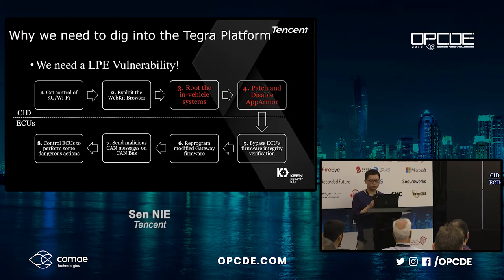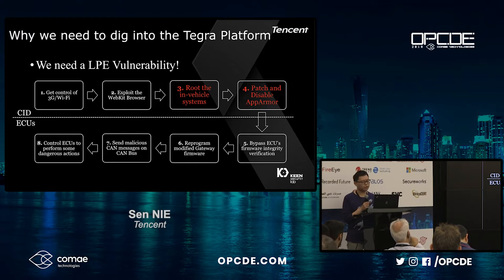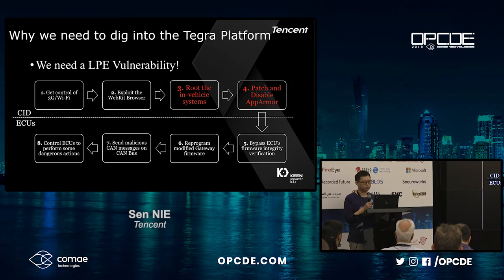We already had a code execution bug in the browser context, but the browser process was running under a low-privileged user ID and also inside the AppArmor sandbox. So we needed a local privilege escalation vulnerability. Here I'll show a demo video of how we get browser shell first without physical access, and then explain why we need to do a local privilege escalation.